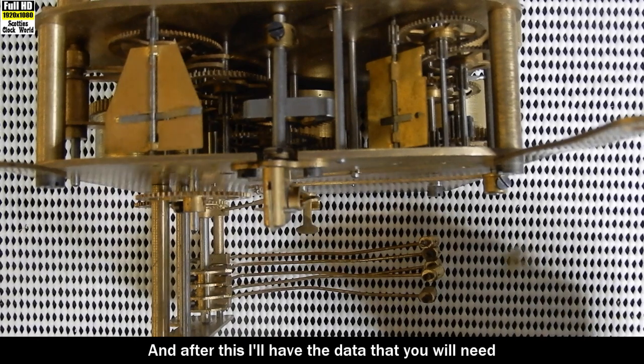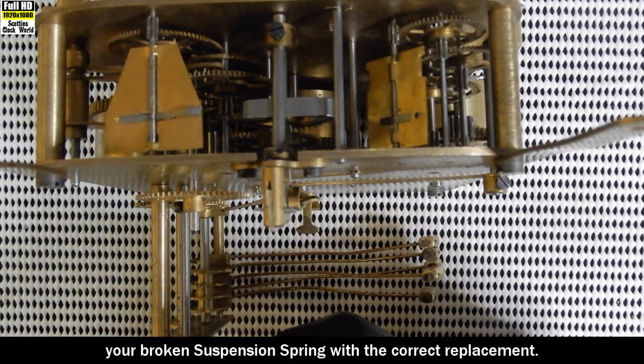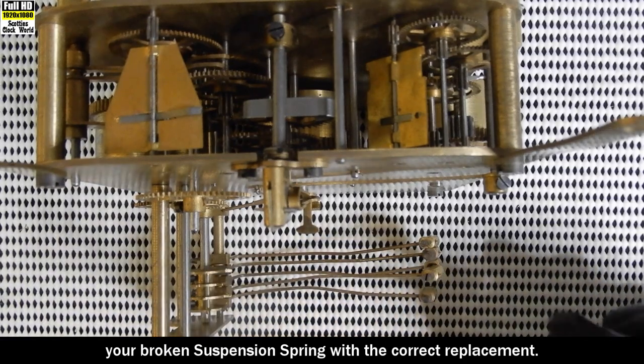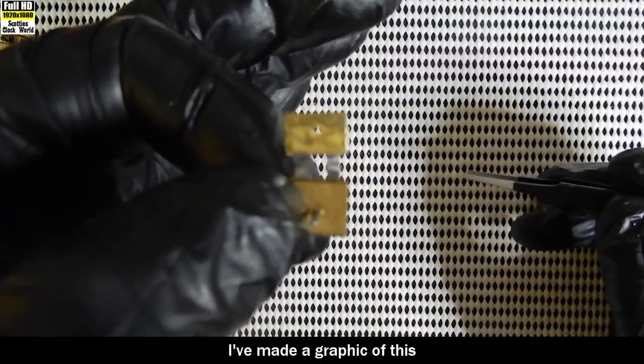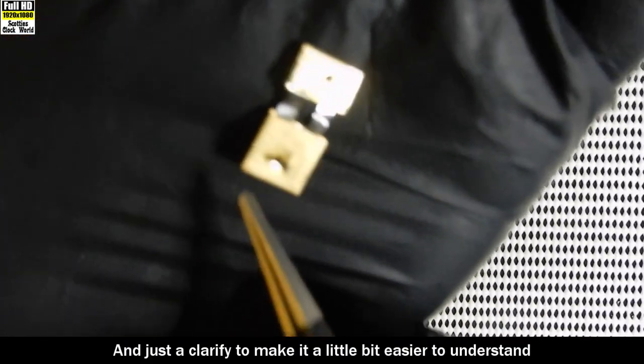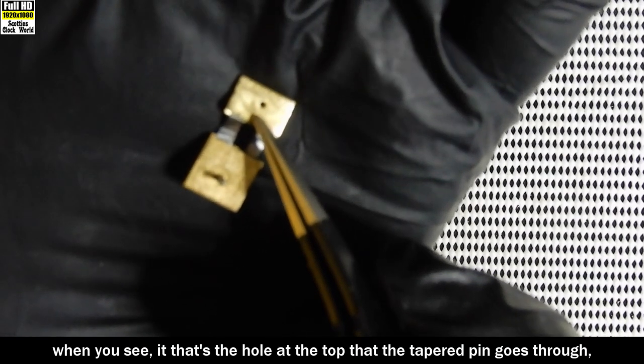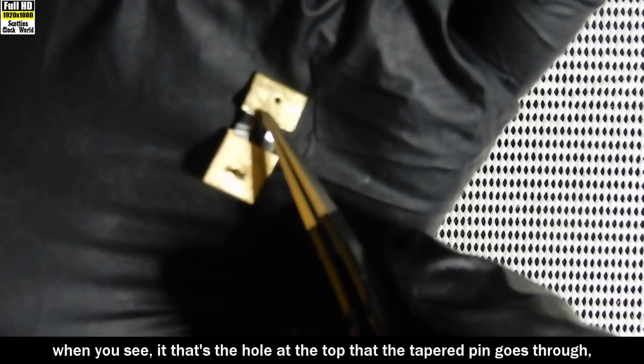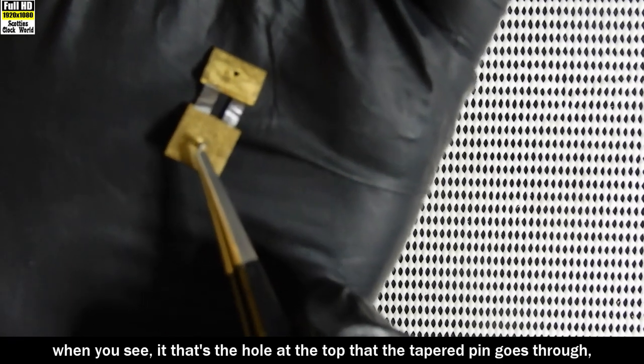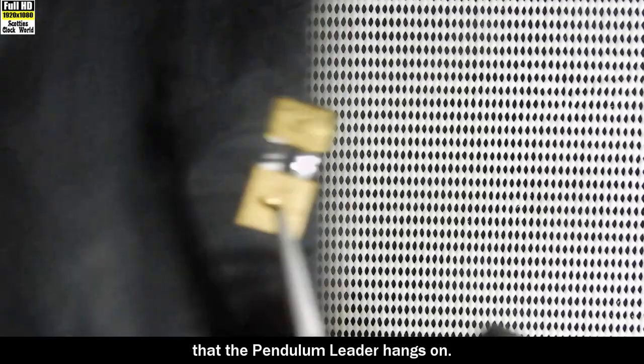And after this, I'll have the data that you will need to be able to replace your broken suspension spring with the correct replacement. I've made a graphic of this that is coming up next. And just to clarify it, to make it a little bit easier to understand when you see it. That's the hole at the top that the tapered pin goes through. That's the post at the bottom that the pendulum leader hangs on.